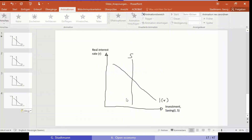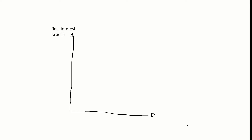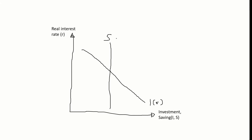Let's use a graph to highlight this relationship. On the vertical axis we have the real interest rate, and on the horizontal axis we have investment and savings. One vertical line symbolizes savings, and the downward-sloping curve labeled I(r) symbolizes investment. In a closed economy, the equilibrium interest rate would be where saving equals investment. Here, however, we are looking at the open economy.